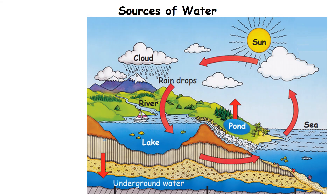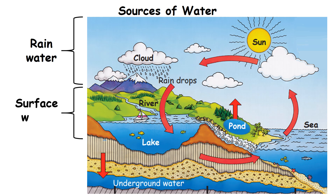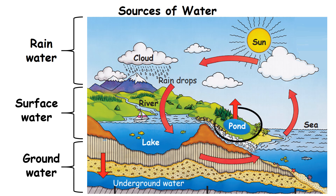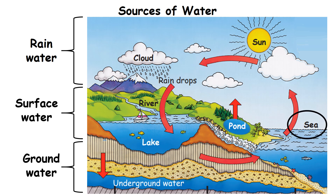Sources of Water. The main sources of water are rain water, surface water and ground water. Surface water is any water body above the ground. It includes ponds, lakes, rivers and sea. It gets filled by rainfall.